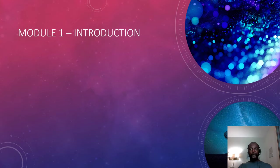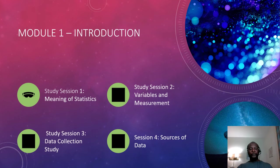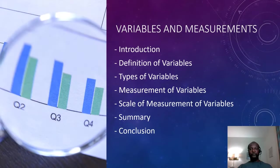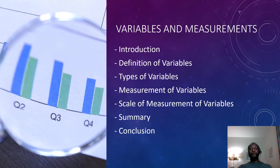This is part of module 1, the introductory aspect of this course. Study session 1 had to do with the meaning of statistics. Now we are in study session 2, where we will be talking about variables and measurements. These are our learning objectives. Each student is expected to be able to define variables, know the types of variables, understand how variables are measured, and understand the scales of measurement. We will give a summary and then conclude.